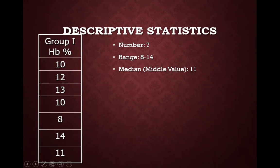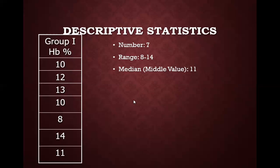Descriptive statistics covers the total number of cases, the dispersion — the range is an example of dispersion of data — and the measure of central tendency. Here we have used median as a measure of central tendency. So this was the descriptive statistics of group 1.